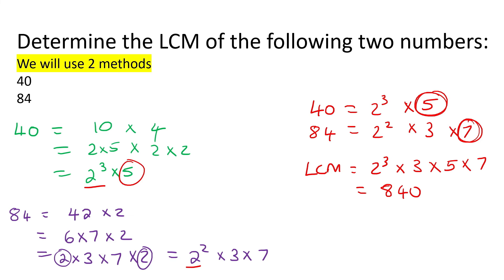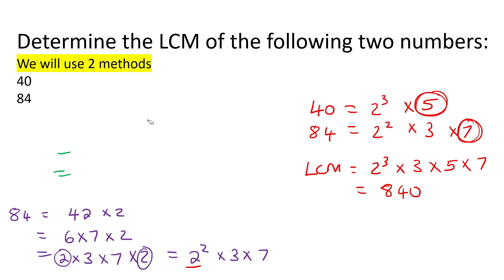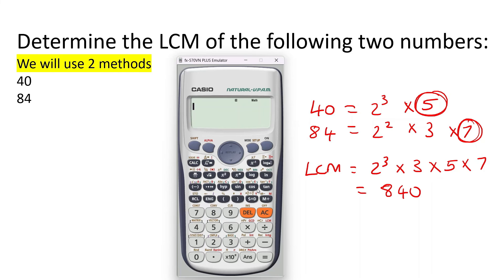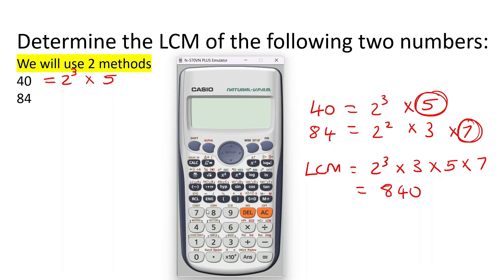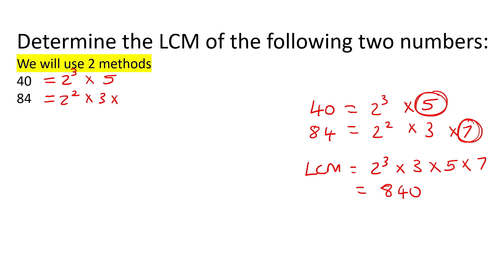Let's use the calculator method and make sure we get the same answer — the calculator method is obviously much faster, but it's good to understand how we got those things. So we start with 40: 40 equals shift factors and there it is — 2³ × 5, just like we got over here. So 40 is the same as 2³ × 5. Then 84 equals shift factors — 2² × 3 × 7, just like we got. So 84 is 2² × 3 × 7, and then you would use the same method from there.